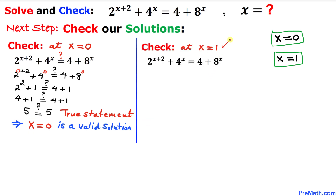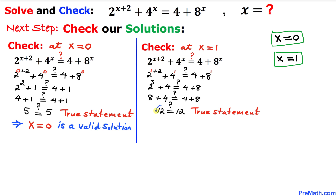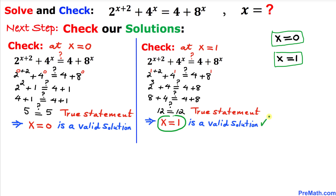Now let's check x equals 1. Replacing x with 1 in the original equation: 2 power 3 gives us 8, 4 power 1 gives us 4, and 8 power 1 gives us 8. The left-hand side turns out to be 12 and the right-hand side is 12 as well. Since both sides are the same, this is a true statement, and x equals 1 is indeed a valid solution.